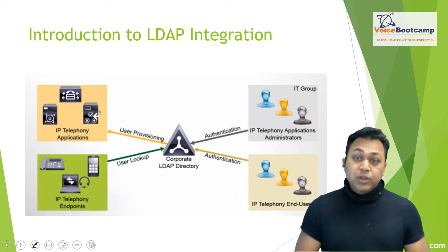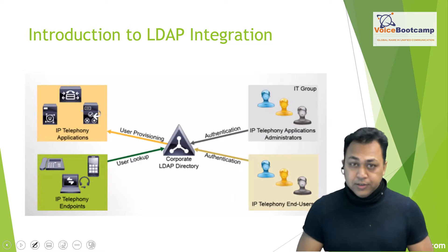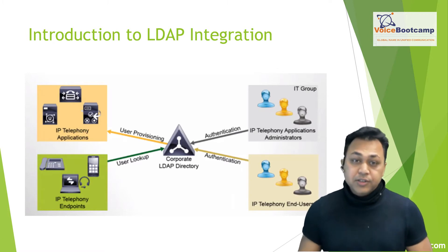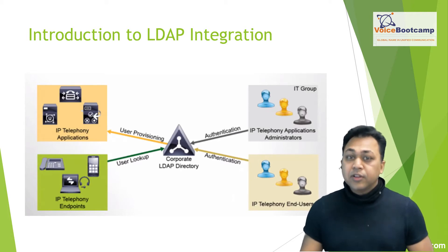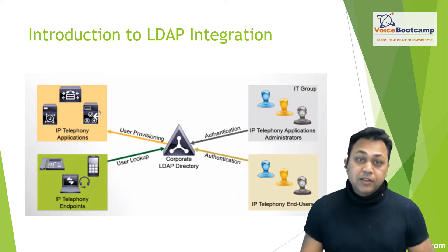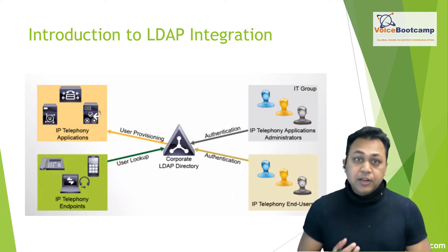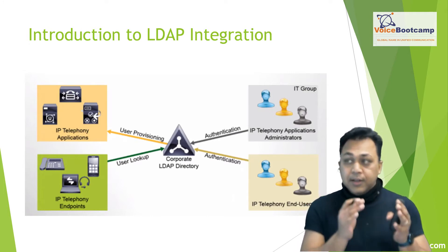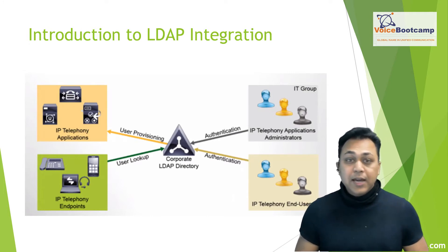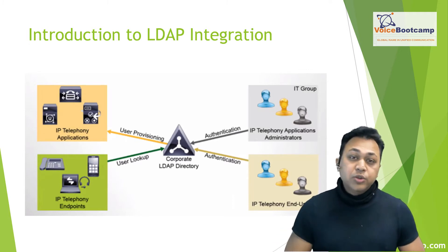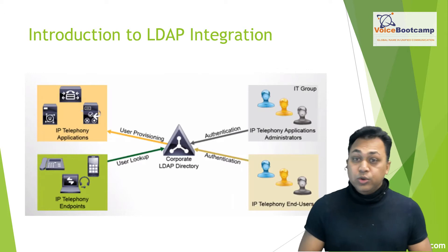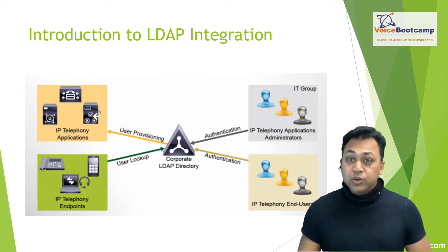It is here that you will understand what exactly directory integration is, the various system requirements, and the user accounts needed to accomplish this task. You will also explore the levels of integration that are available. There are two types of integration: LDAP synchronization and LDAP authentication. You will understand the various attributes of LDAP integrations in terms of how to map the appropriate fields between Microsoft Active Directory and Cisco Unified Communication Manager, along with considerations for full synchronization and incremental synchronization.